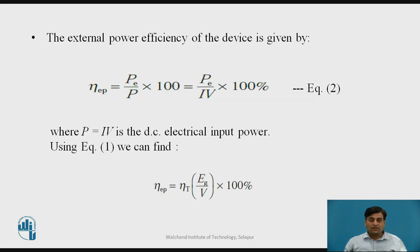Another definition for efficiency of injection laser is the external power efficiency, given by eta equivalent equals Pe divided by P, times 100, where P equals I times V is the electrical input power. Using equation 1, we can find that eta equivalent equals eta total times Eg divided by V, times 100.